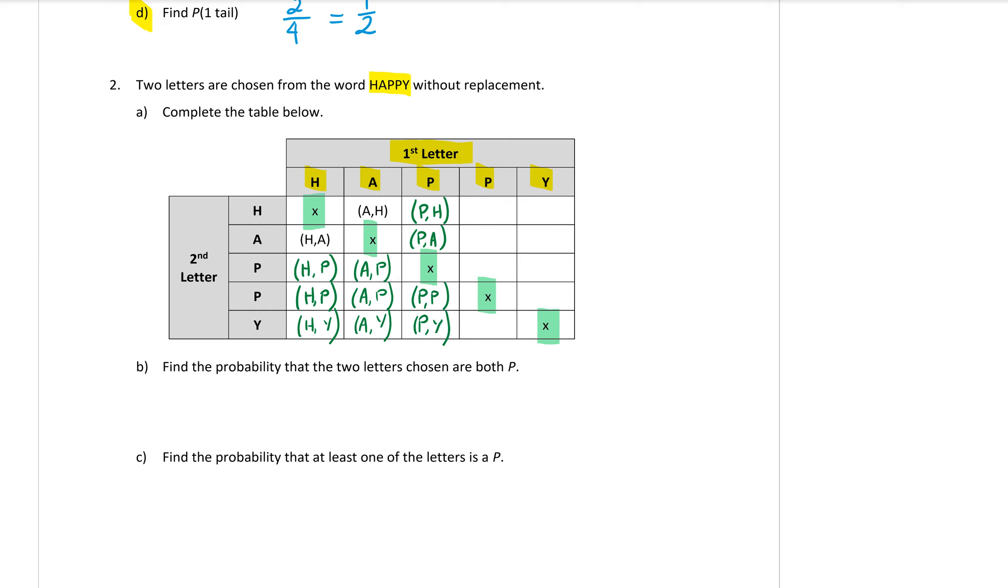The fourth column, so this is for the second P, so P H, P A, P P, and P Y.